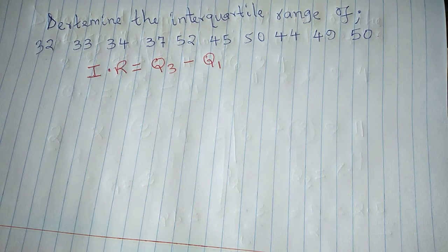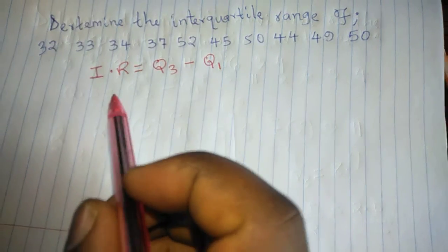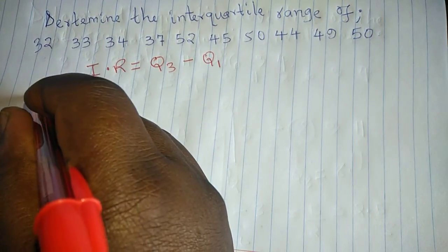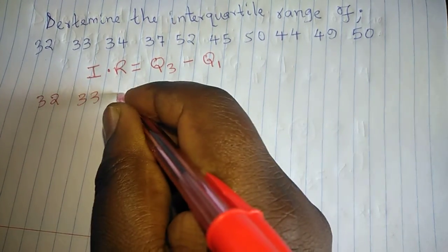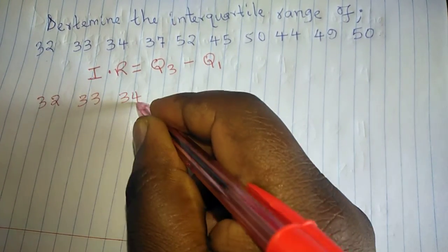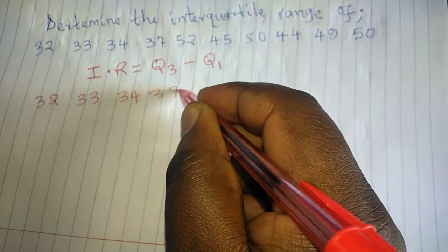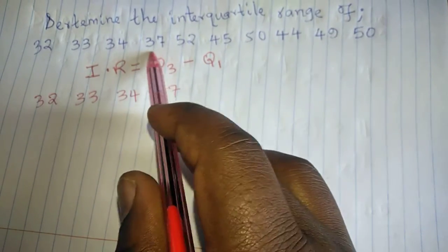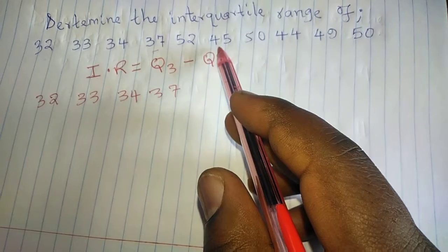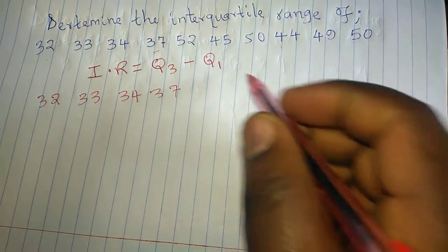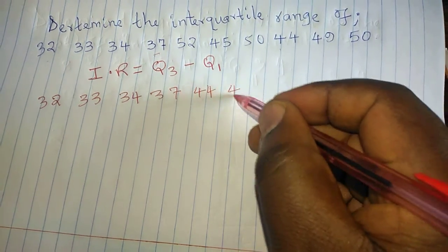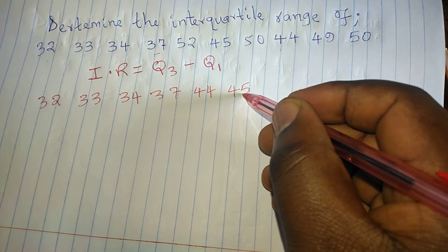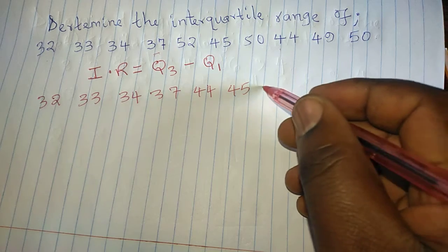To identify Q1 and Q3, we first of all arrange the data in ascending order such that we have 32, 32, 33, 34, 37. From 37, we can go to 44. I think 44 will be the next. From 44, 45. Then from 45, we can get to 50.